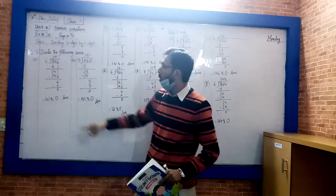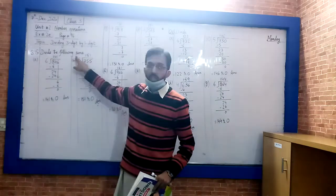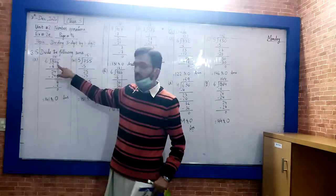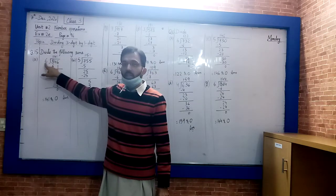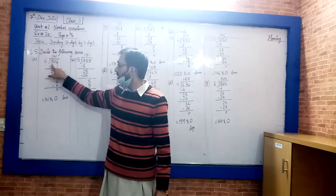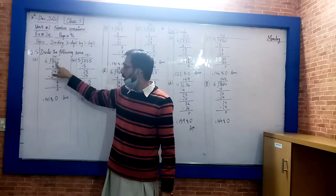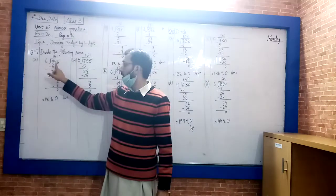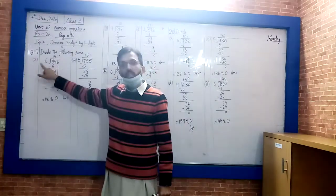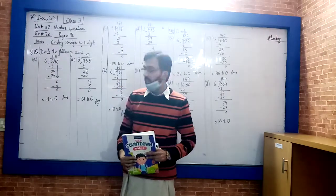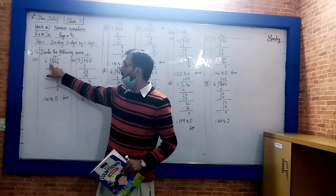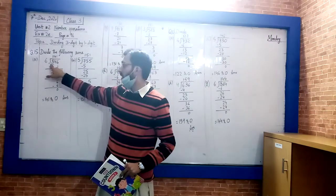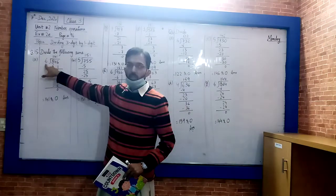We have a question to divide the following sums. The first part is 846 divided by 6. You can see this is 3 digits divided by a 1-digit number. The first digit is 8.